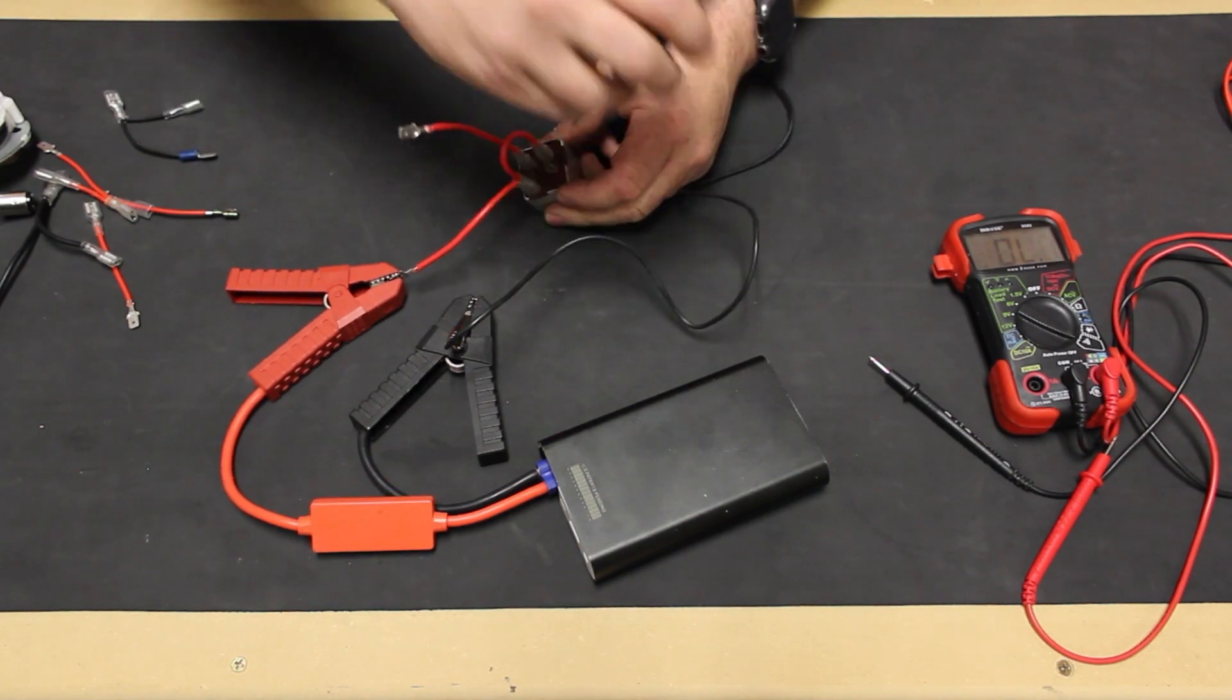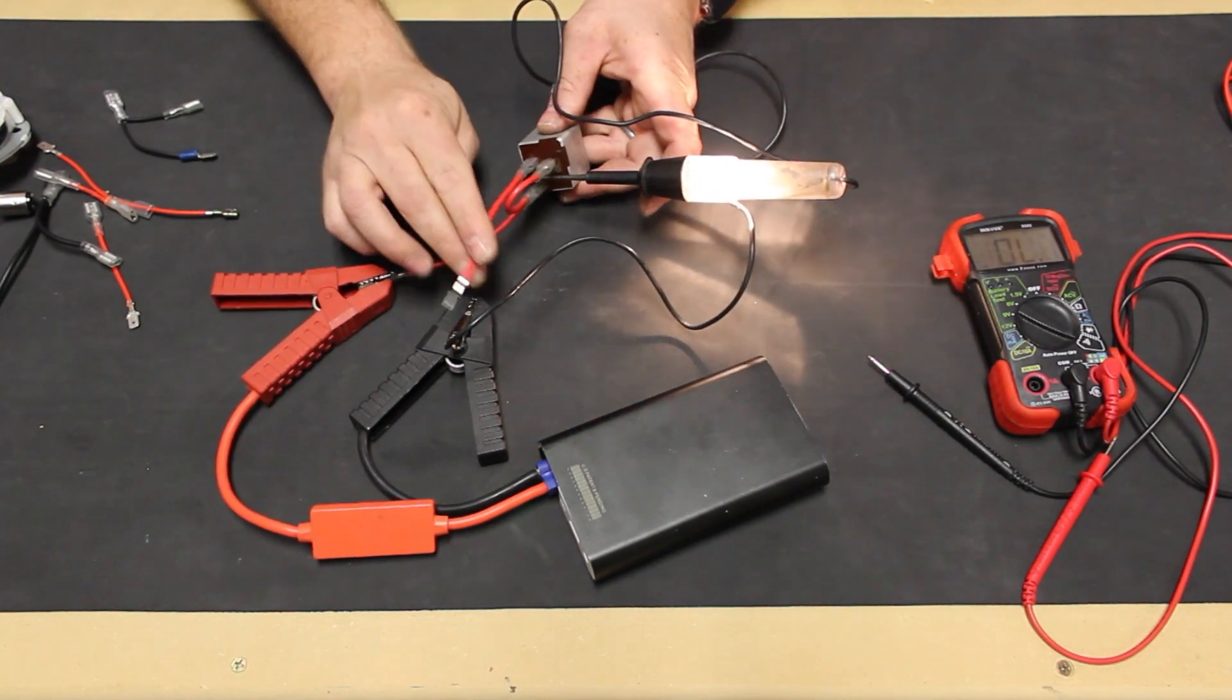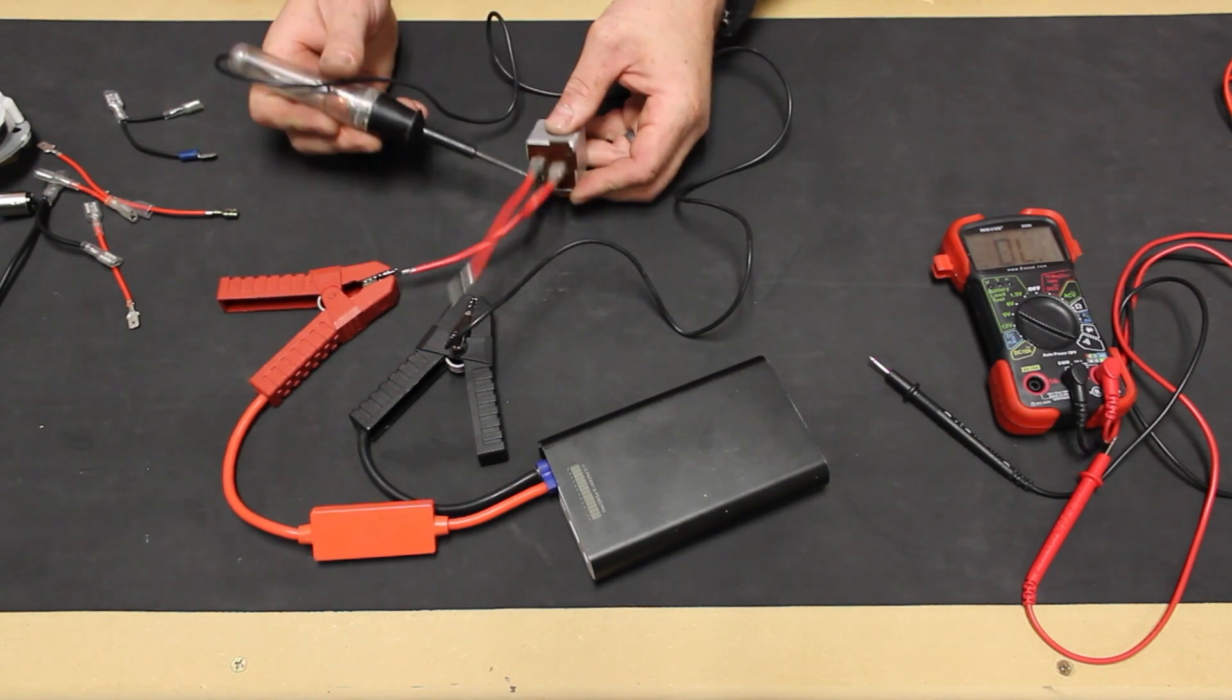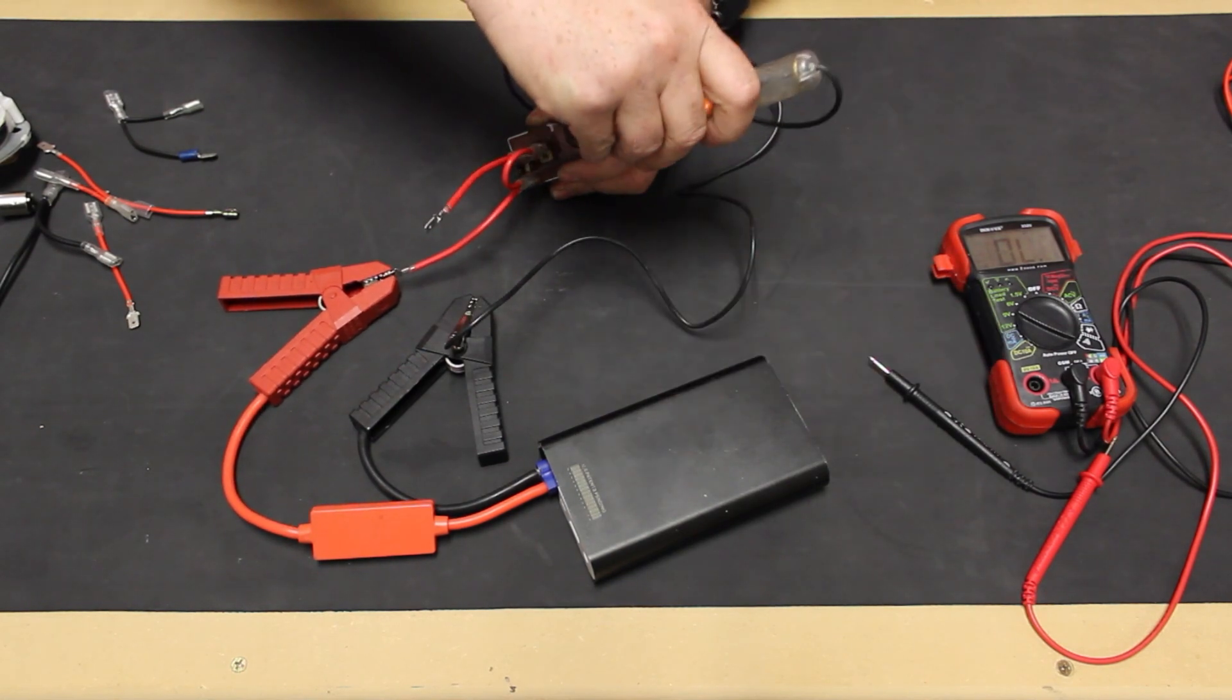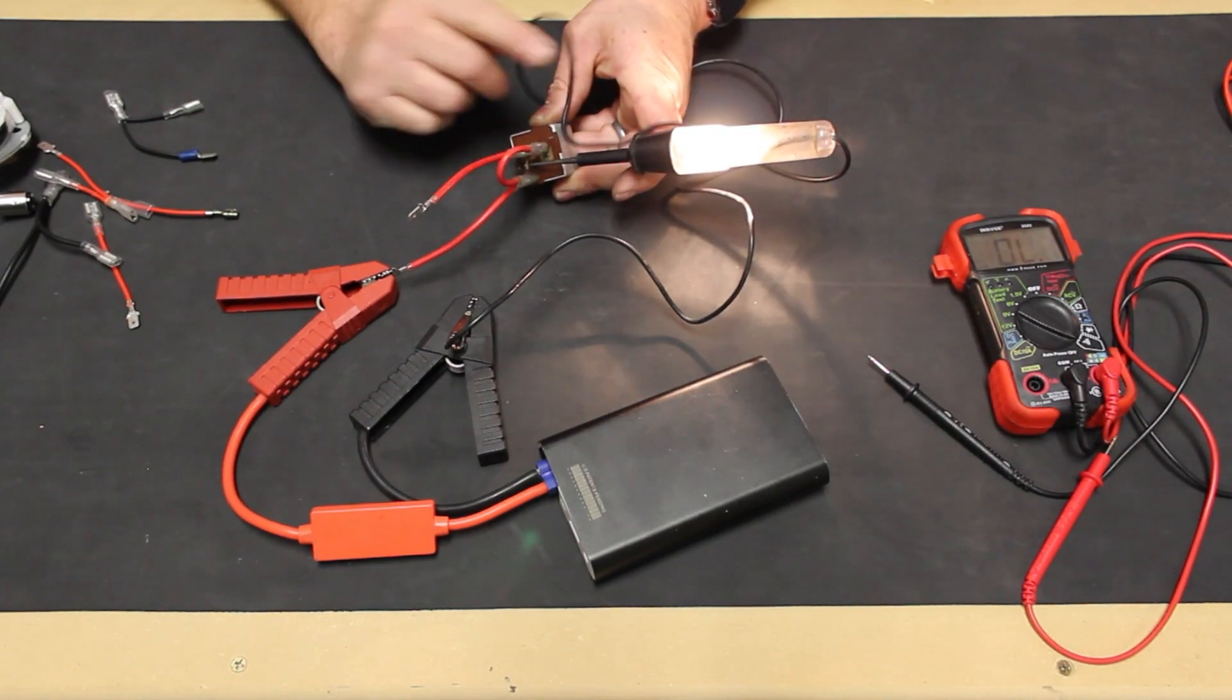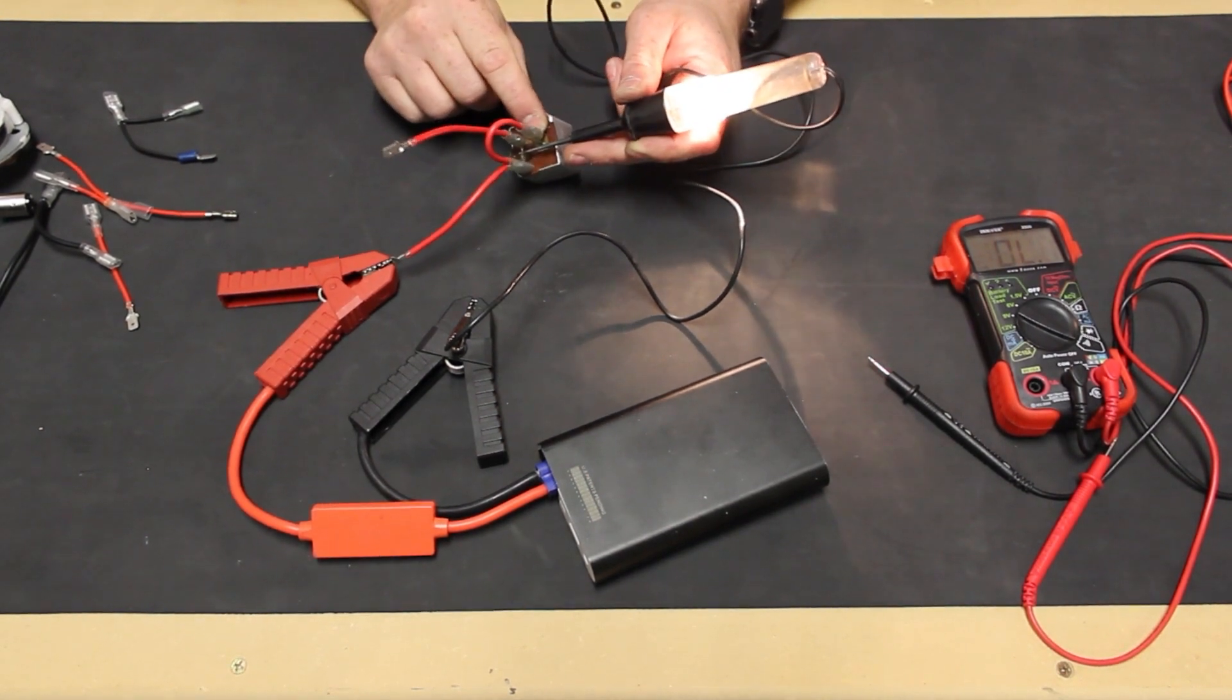The headlights wouldn't actually turn off though, as the S terminal toggles the relay back and forth between the low beam 56B terminal and the high beam 56A terminal. So, when the 56B turns off, the 56A turns on and back and forth. Now we know our headlight relay works, so it too can be installed in our car along with the rest of the components we've tested.